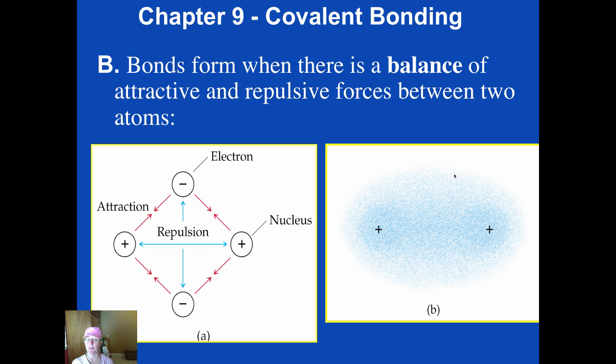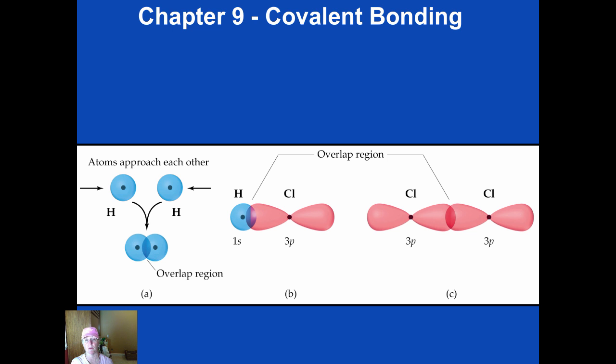Now when atoms get near each other there are both repulsive forces and attractive forces. Their electron clouds will repel each other, their nuclei will repel each other. But the nucleus of one atom is attracted to the negative electron cloud of another and vice versa. What atoms want to do is to get the just right distance from each other. They're trying to get a balance of those attractive and repulsive forces.